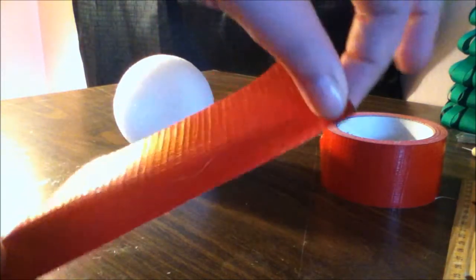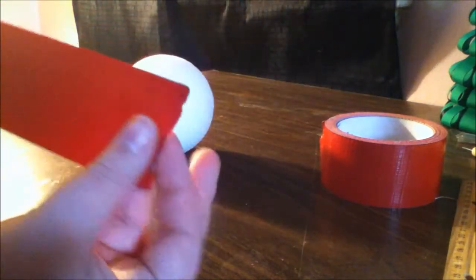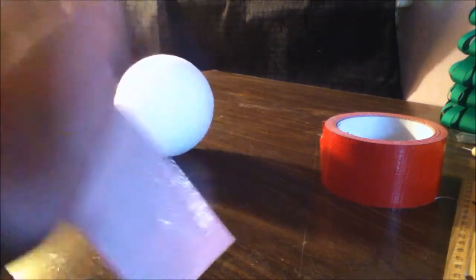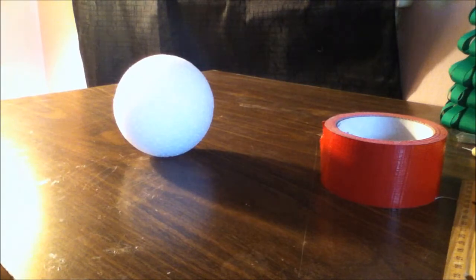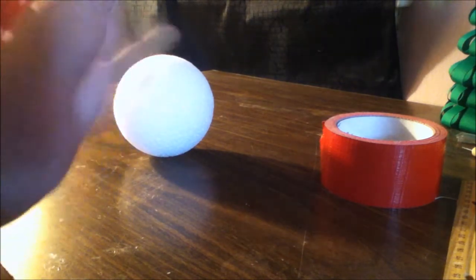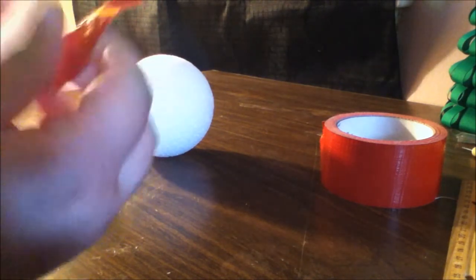First thing you want to do is get a strip of red duct tape about seven inches long. It doesn't really matter. And then what you're going to want to do is just rip it in half or cut it in half.